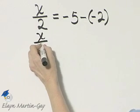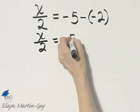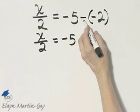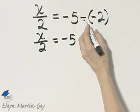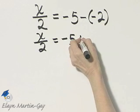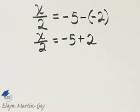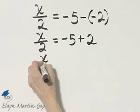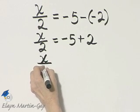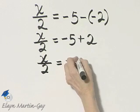So I'll rewrite the left: x divided by 2. This is negative 5. Since this is subtraction, I'll rewrite it as an equivalent addition. So that would be plus the opposite of negative 2, and the opposite of negative 2 is positive 2. So I have x over 2 is equal to negative 5 plus 2. That is negative 3.